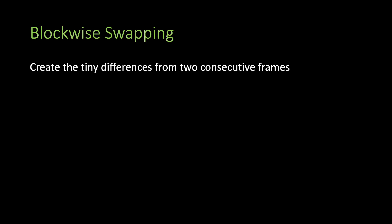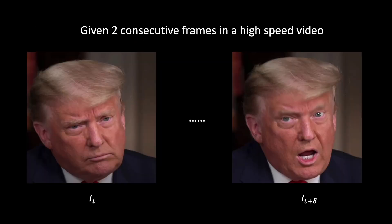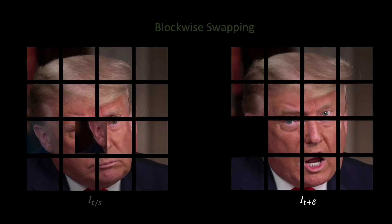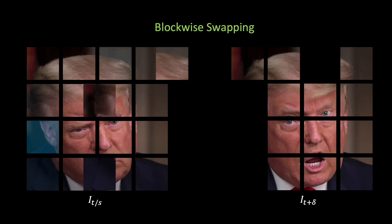Block-wise swapping is used to create tiny differences from two consecutive frames. In particular, given two consecutive frames in a high-speed video, we split these frames into smaller patches and randomly swap corresponding patches. The inputs to the framework are swapped image, original image, and its random cropped version.